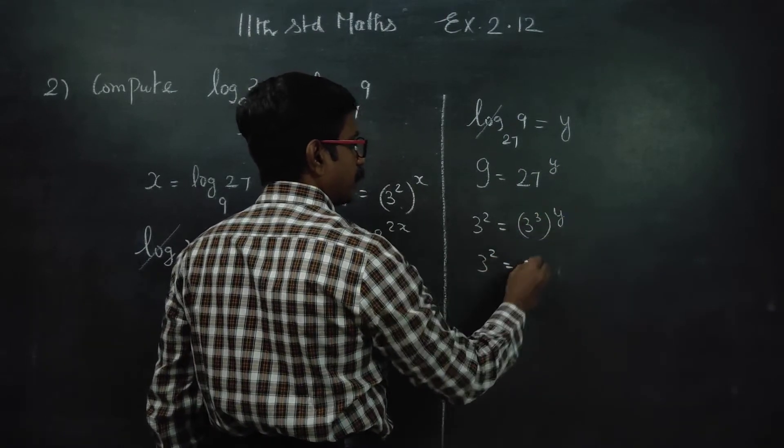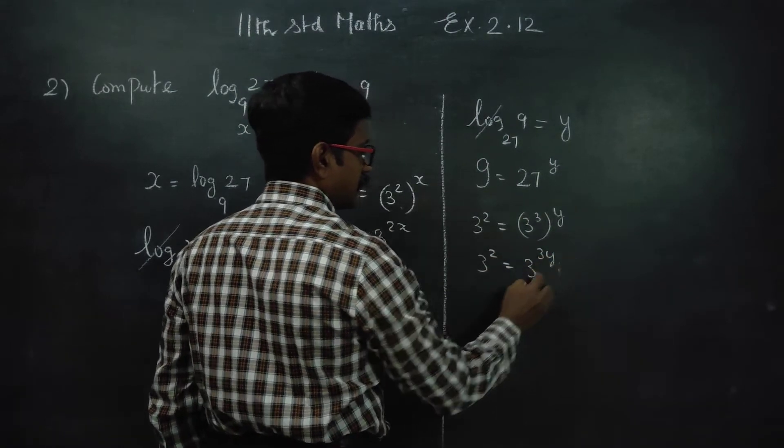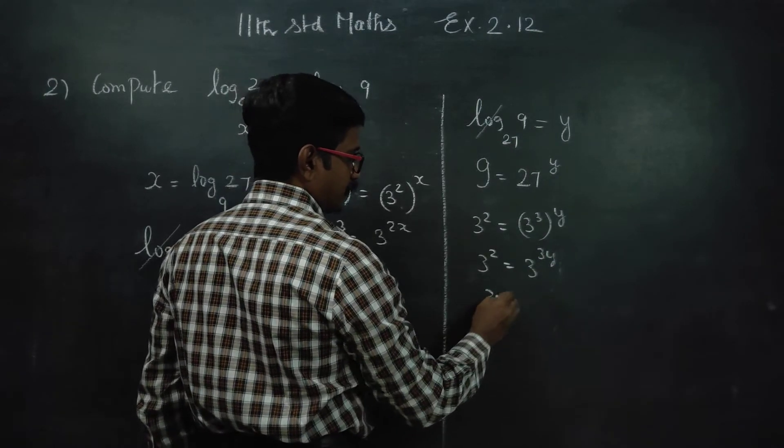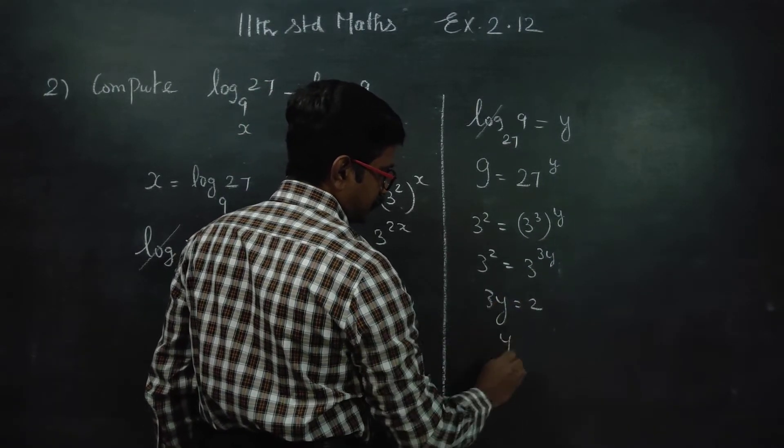3 square is equal to 3 cube power Y. Power on power means multiply, so power is 3Y. Base are the same, power is the same. Therefore, 3Y is equal to 2. Y is equal to 2 by 3.